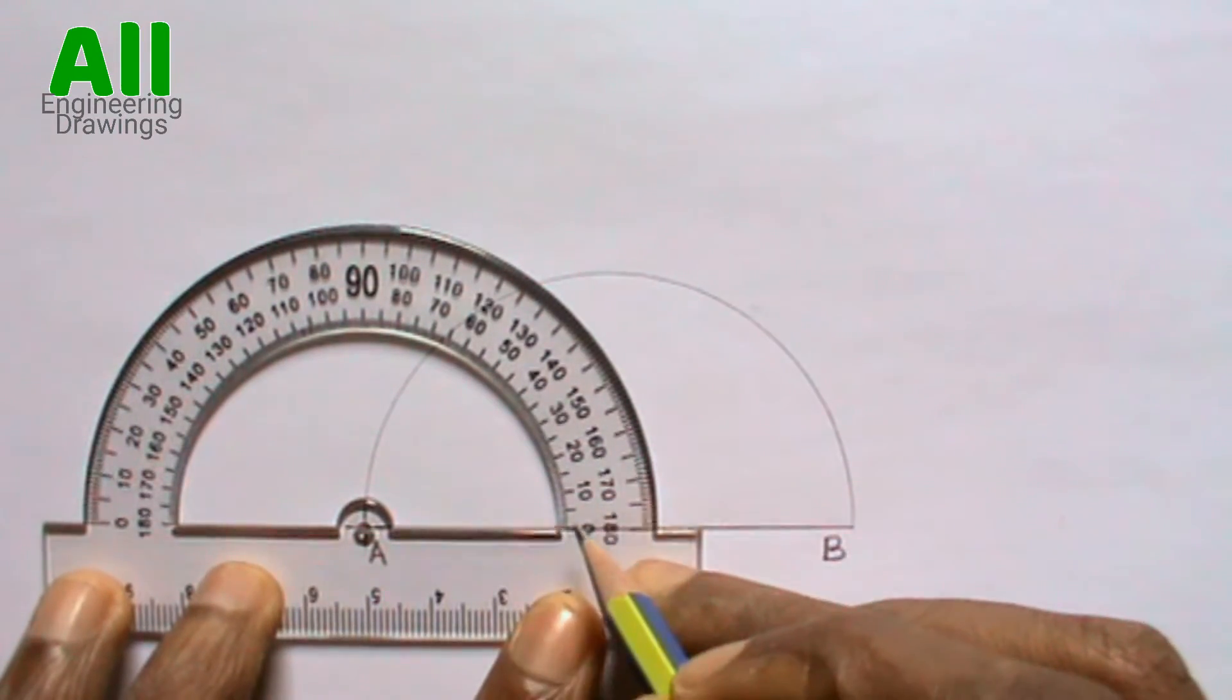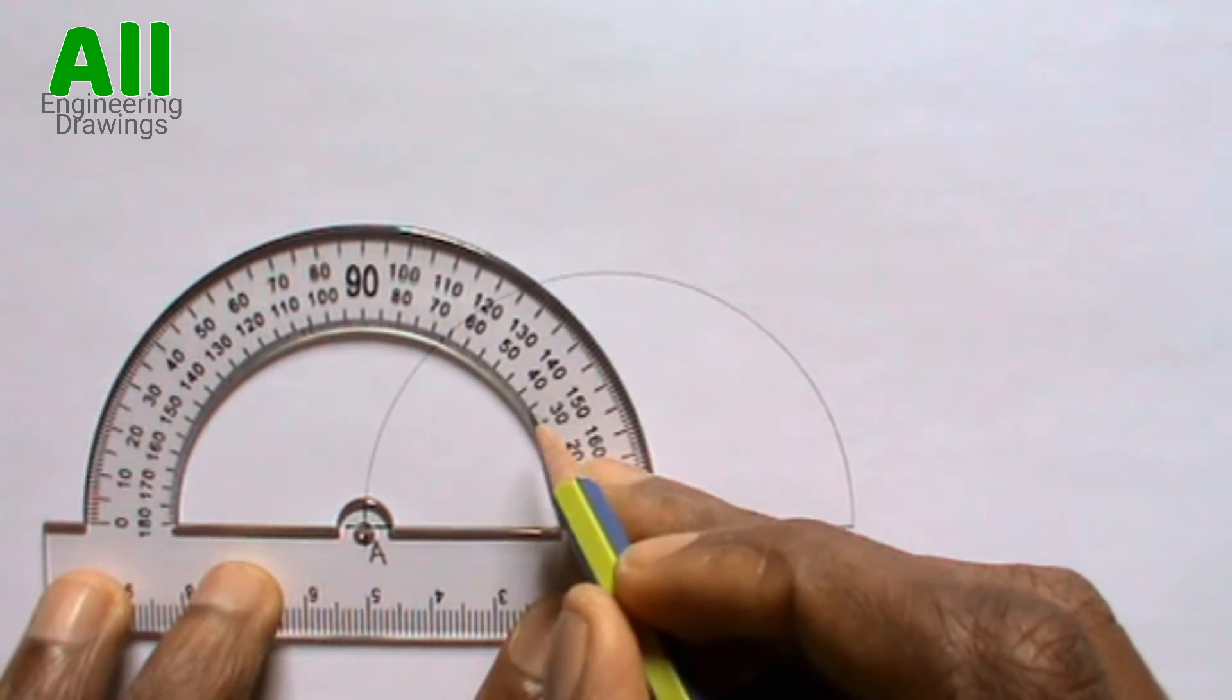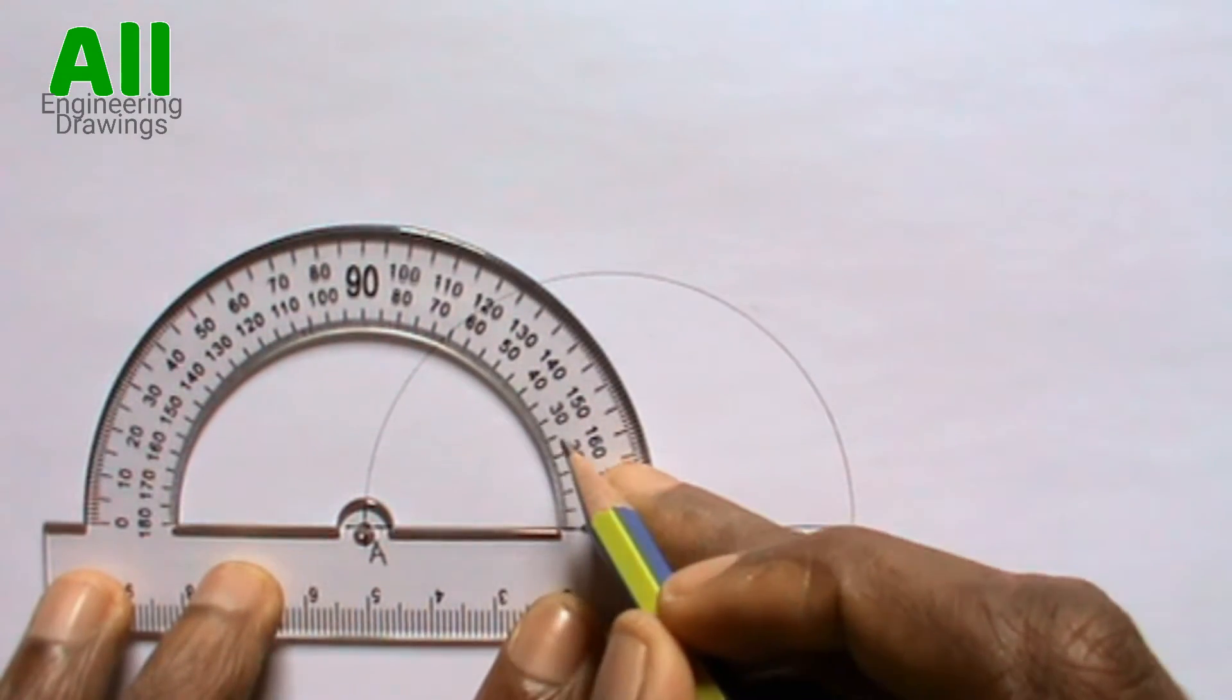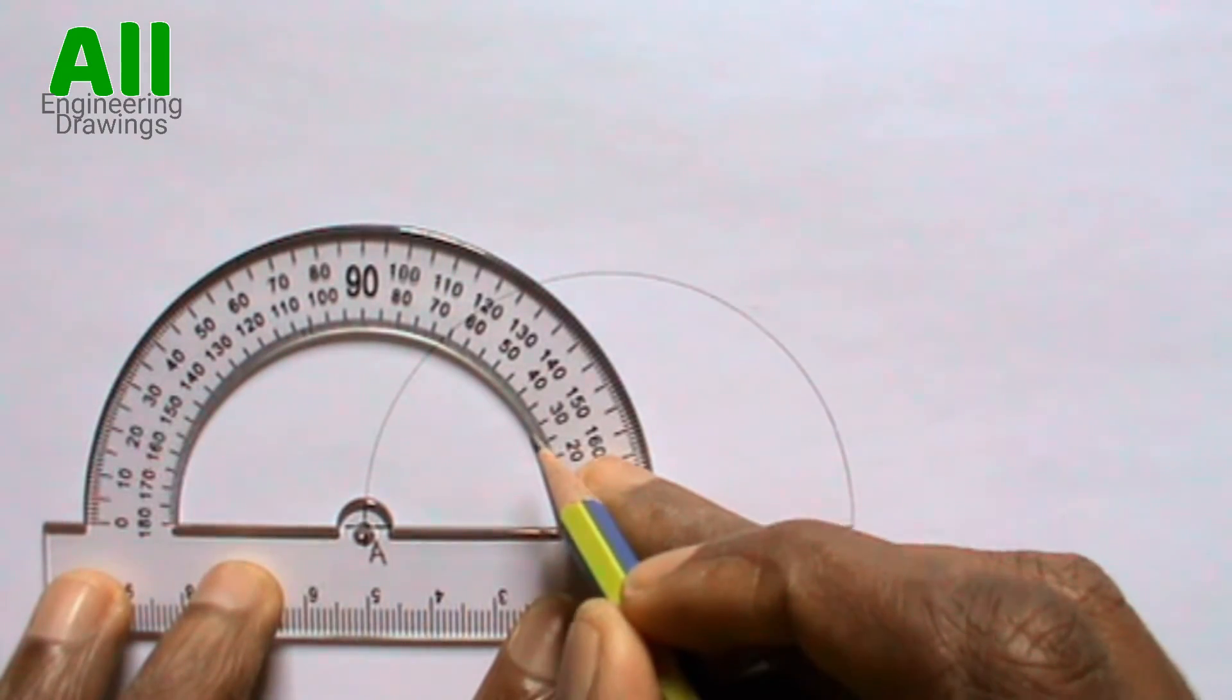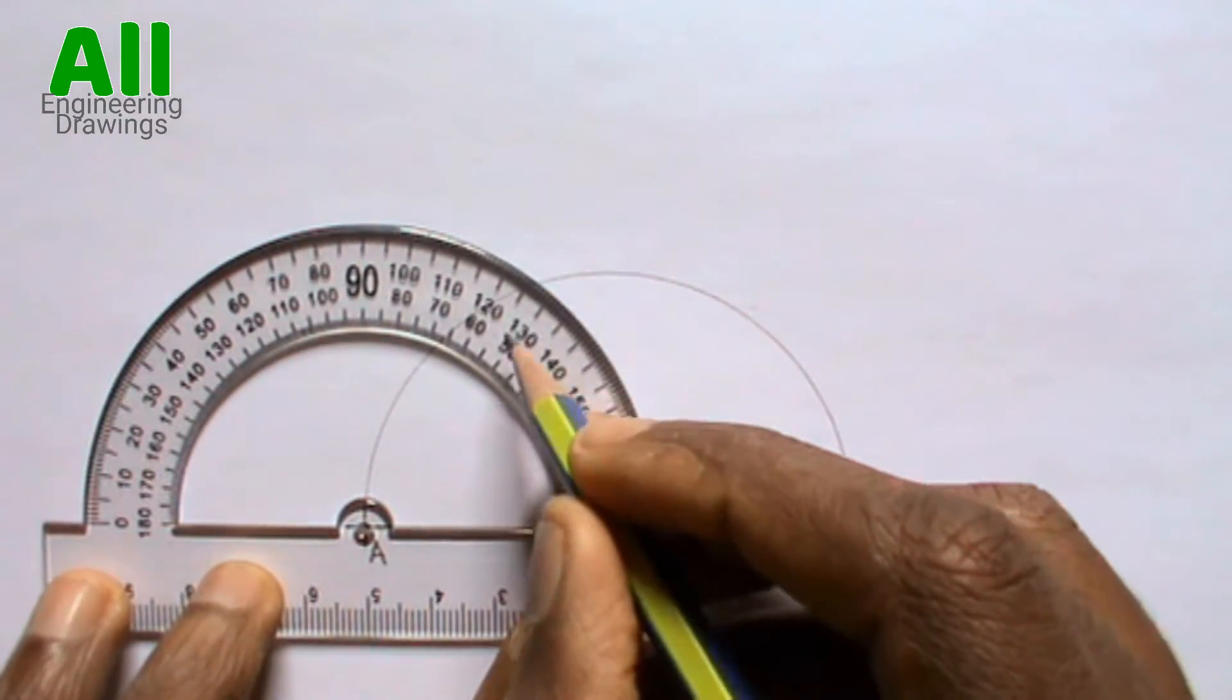If you are given angle 30, you have to mark angle 30. If you are given angle 50, you have to mark angle 50. If you are given angle 20, you have to mark angle 20. So you have to mark the given angle. So I am marking my given angle.